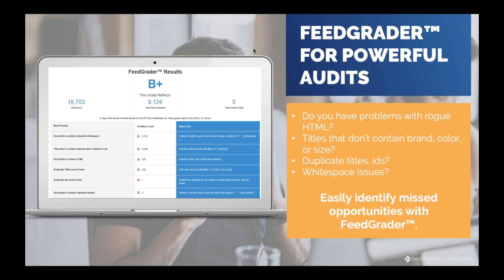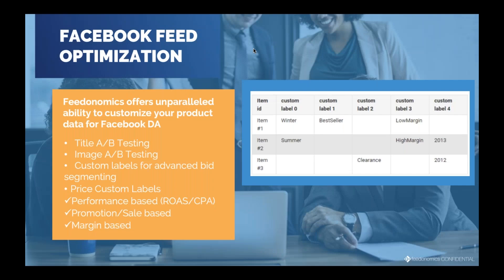We can also look at issues like duplicate titles and IDs — things that might be very hard to see unless you look at every individual product title and category. These are great opportunities that FeedGrader can identify.